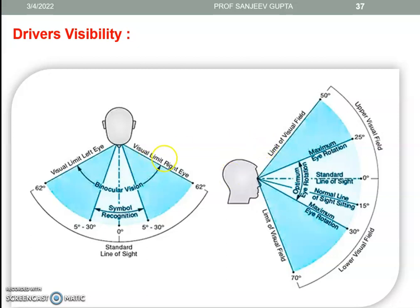We have a graph of the human head's binocular vision, which is approximately 120 degrees at the front. The visual limit from the left eye is 5 degrees to 30 degrees, and similarly for the right eye, 5 degrees to 30 degrees. In the upper and lower visual fields, around 120 degrees is also covered. A person can see 25 degrees to the left side and 30 degrees to the right side.